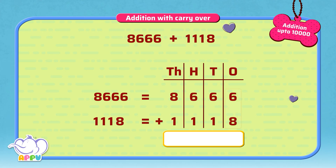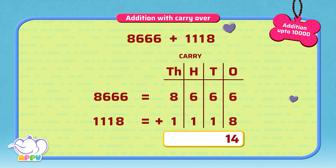We add ones first. 6 plus 8 equals 14. We cannot have two digits, so we move the 1 to the tens place. We add the tens column now. We add carry over 1 with 6 and 1. This equals 8.